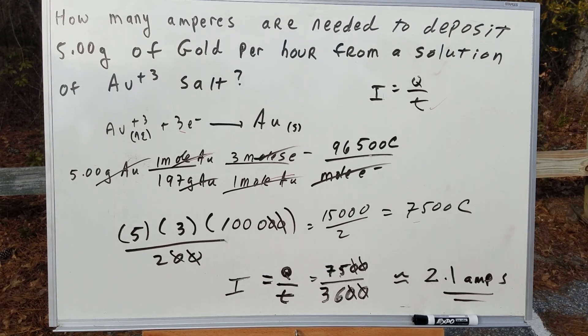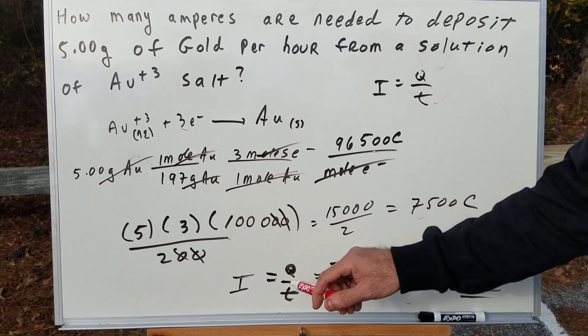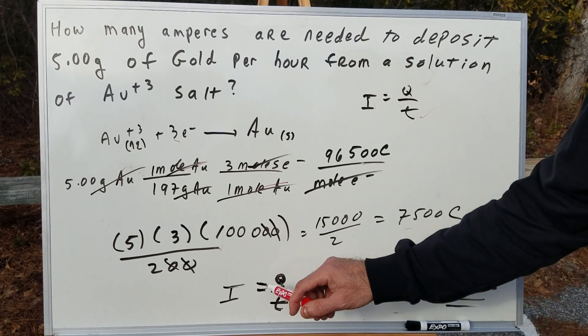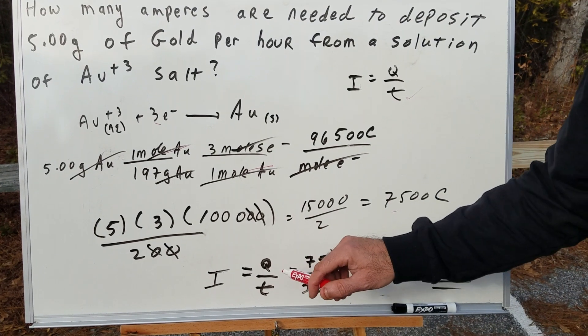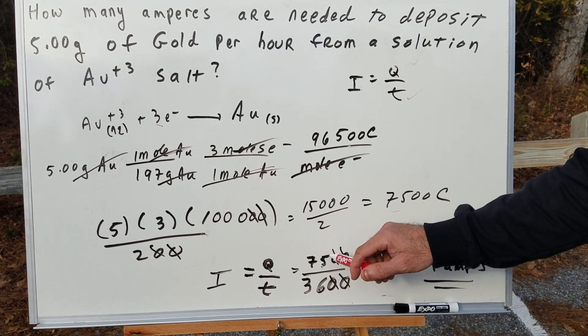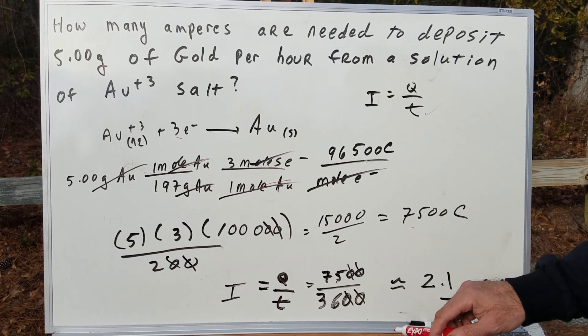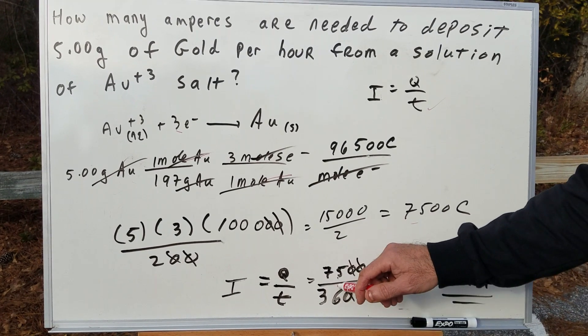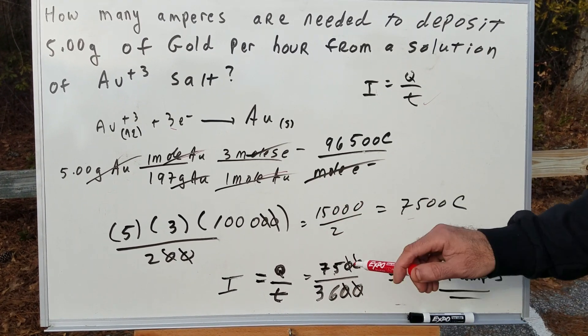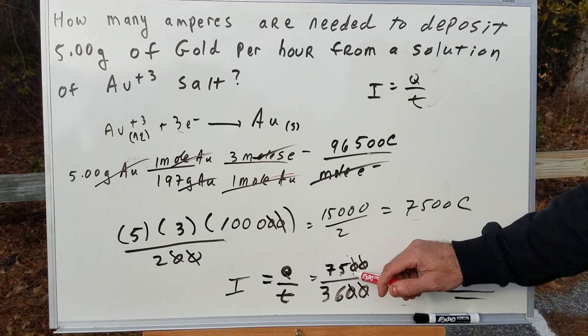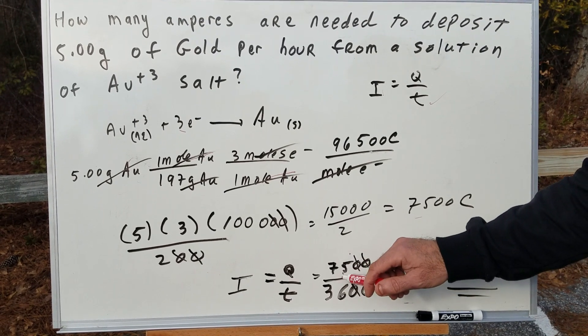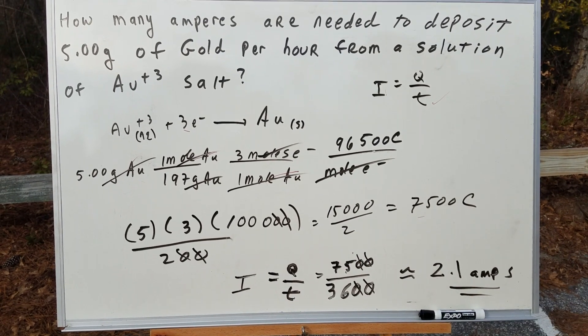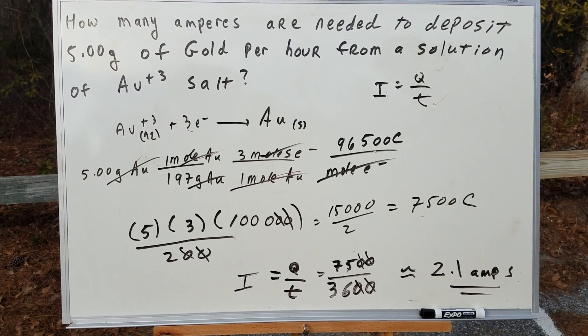Up goes the formula: I equals Q over T. I always teach my students to call this the 'I quit' formula. I quit. I equals Q/T. 7,500 is the Q which we worked so hard to get, over 3,600 seconds. You always got to work in seconds. There I go again, bopping out the zeros. So it becomes 75 over 36, which is a little bit more than 2.